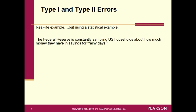Now let's use a statistical example. The Federal Reserve constantly samples U.S. households about how much money they have in savings for rainy days. They test whether mu — the average amount households have saved — is equal to $12,000. The alternative is that it's greater than $12,000, hoping people have more reserve for emergencies like job loss during the coronavirus pandemic.